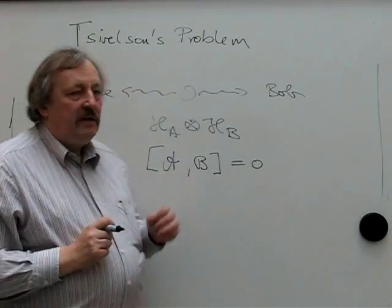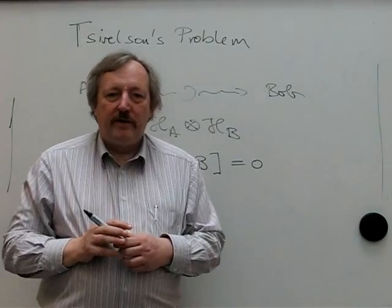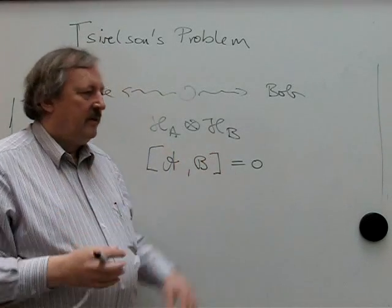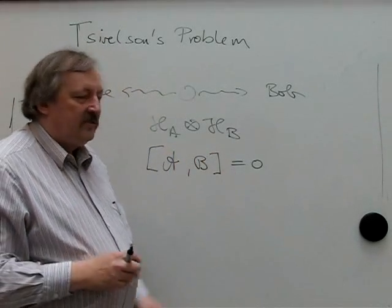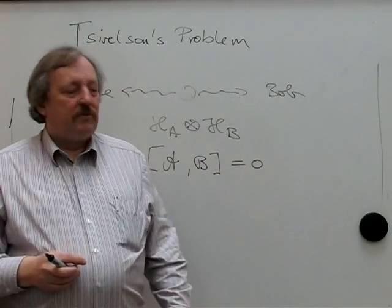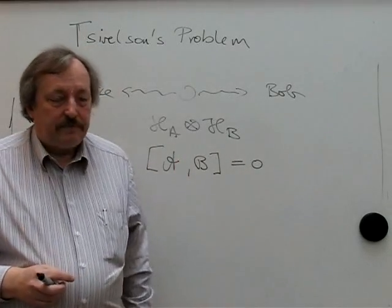When A and B are type 2 or type 3 von Neumann algebras — not of type 1, which is like all bounded operators on a Hilbert space — then there may be a difference.